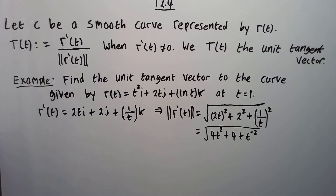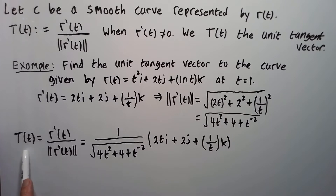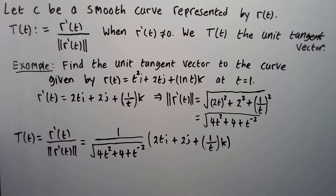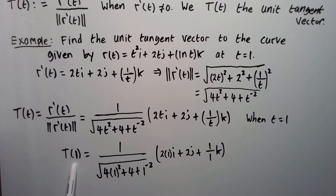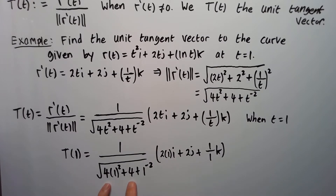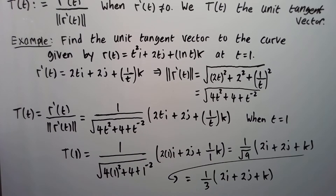Now let's write our unit tangent vector capital T. It equals R prime over magnitude of R prime, which is 1 over the magnitude of R prime times R prime. We evaluate this at T equals 1. Plugging 1 in place of T everywhere: under the square root we get 4 times 1 squared plus 4 plus 1 to the minus 2, which is 9. So it's 1 over square root of 9, and the vector is 2i plus 2j plus k. Square root of 9 is 3, so T of 1 equals one third times the quantity 2i plus 2j plus k.